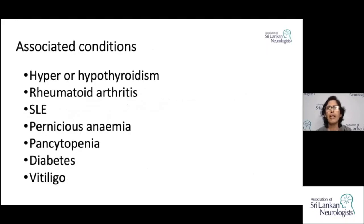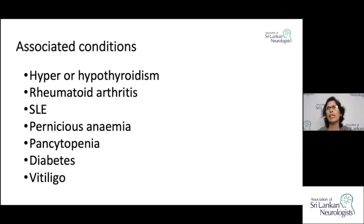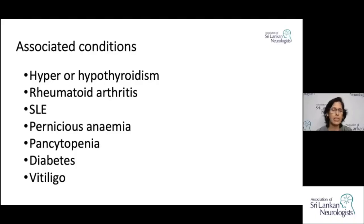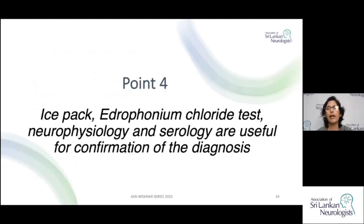As myasthenia gravis is an autoimmune condition, other autoimmune conditions may be associated with it. Hyperthyroidism is commonly associated, so thyroid function should be checked routinely. Rheumatoid arthritis and diabetes are other common associations encountered in clinical practice.